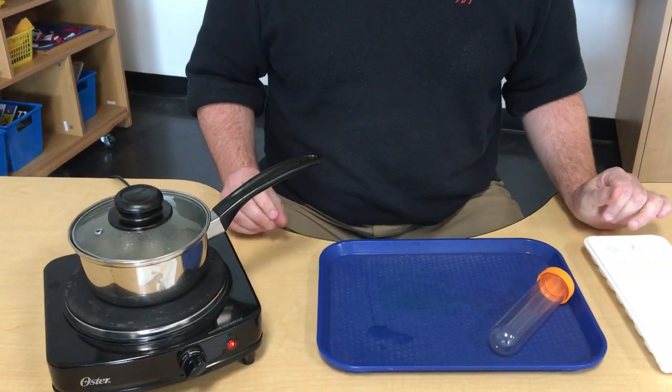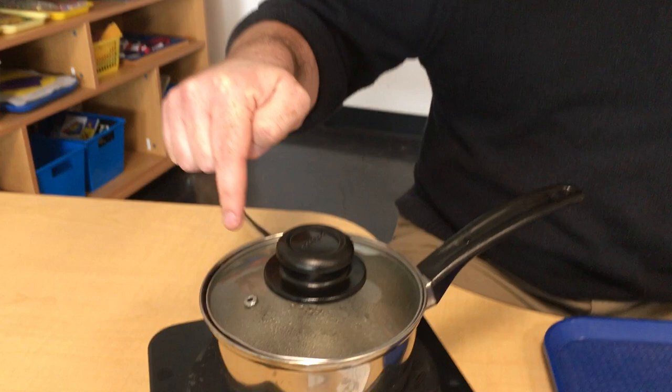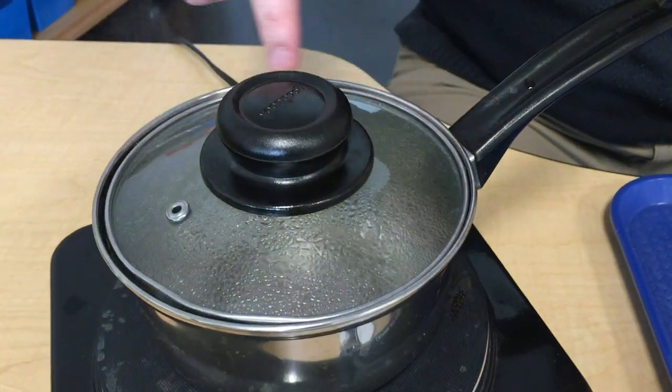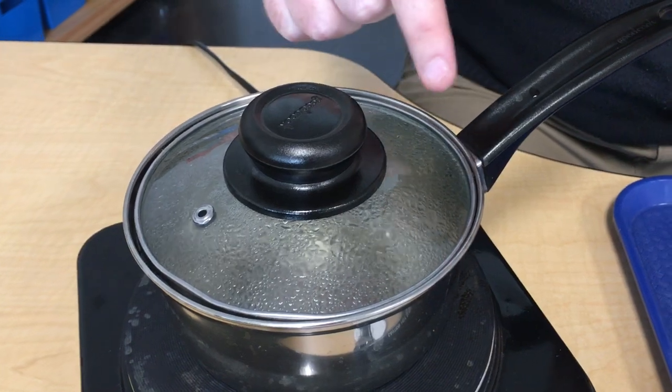And then, what happens to the water when it gets hot? Look at this. On the glass on our hot plate, something's happening. Something's gathering up there. That is called condensation.